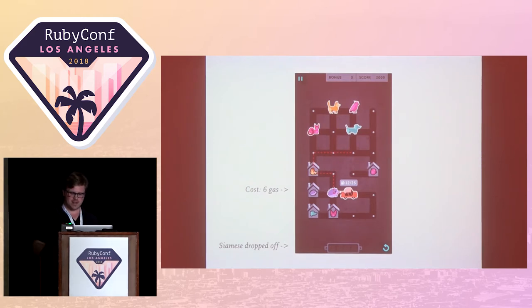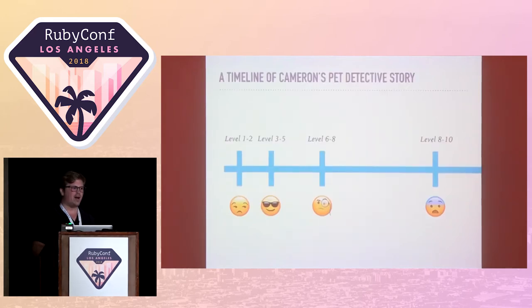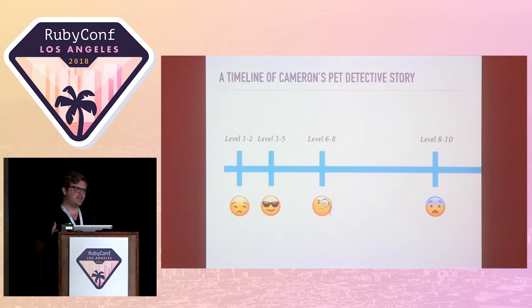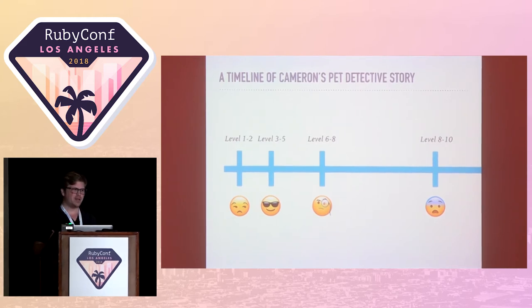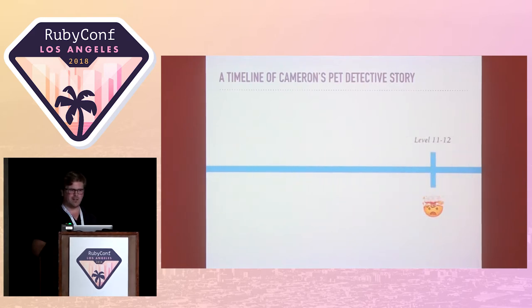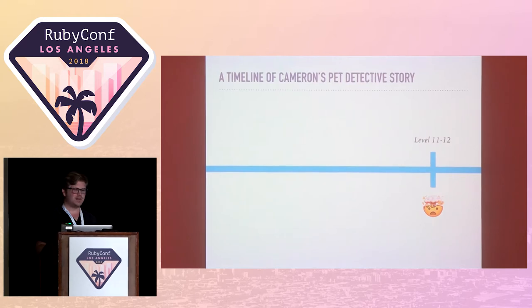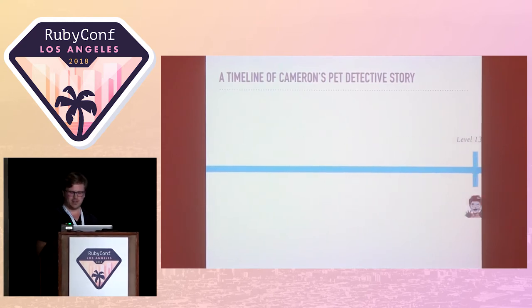Fairly simple game mechanics. This is sort of how I progressed through the game. Levels one and two were drop-dead simple — you can't really lose because it's supposed to teach you how the game works. Levels three through five I was like, yeah, I totally got this. Levels six through eight were getting a little more challenging. Levels eight to ten, I was starting to sweat. By levels 11 and 12, my brain just exploded because it was really hard to figure out how to solve these puzzles. In fact, it got so bad that I couldn't get past level 12, and that's what spurred this whole talk and what I worked on called Pet Detector.